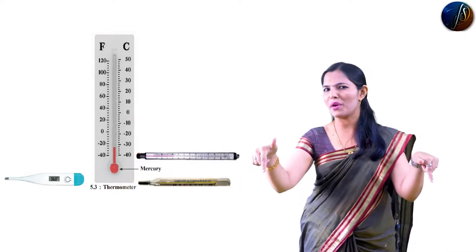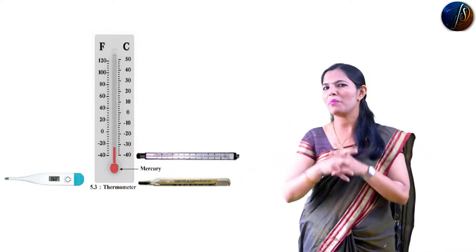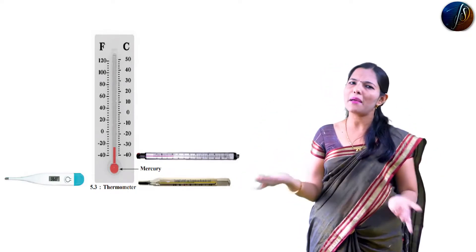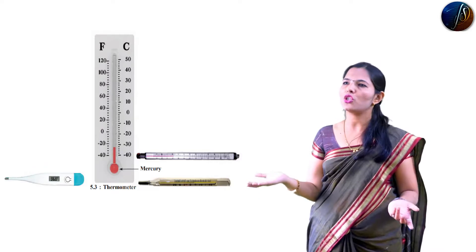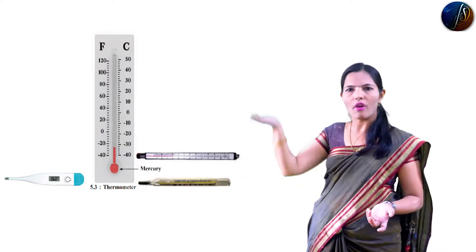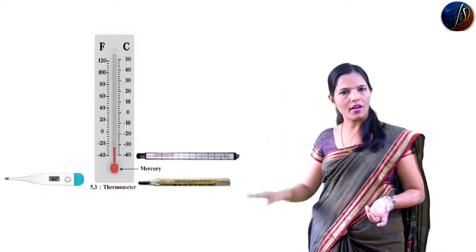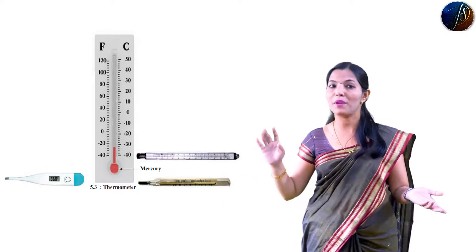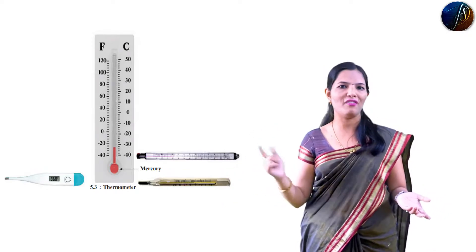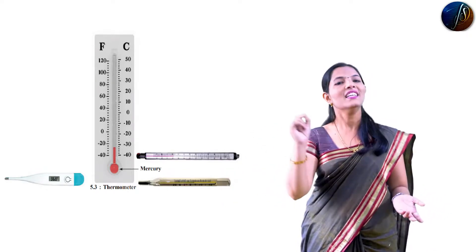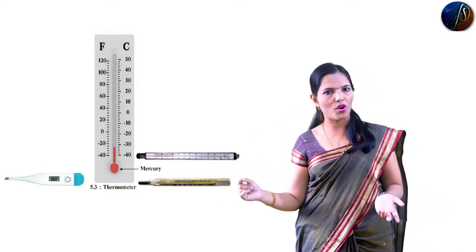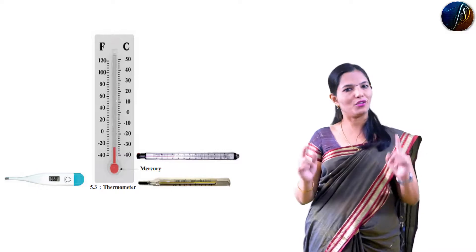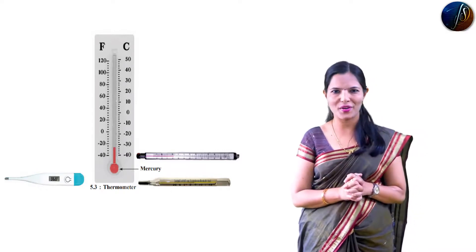Write your answer in the comment box. If there is a temperature change — the temperature going low or high — that is why it can be a vector quantity. If the temperature changes in a direction, it is a vector quantity. But temperature alone is a scalar quantity.